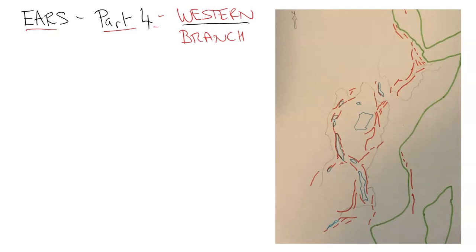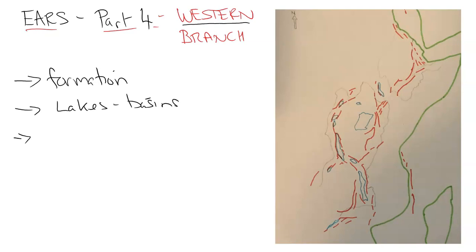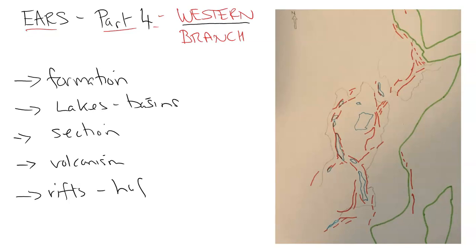We're going to look at the formation of the Western Branch. We'll look at the lakes and the deep basins included in this part, the sections of the Western part, the volcanism or lack of volcanism in this area, and also the different rifts, half grabens, and what those are. So join me now for the video.